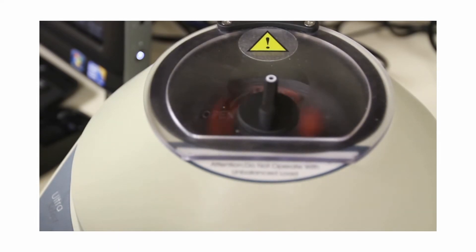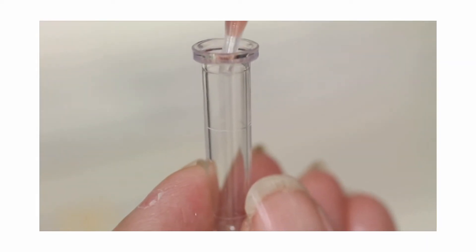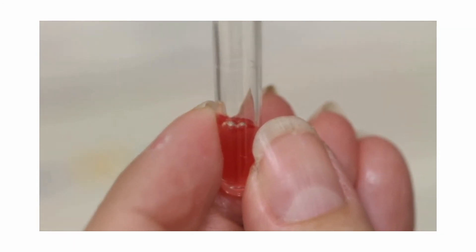This spinning forces the heavier blood cells to the bottom of the tube and leaves the serum at the top. This process is necessary because it is serum that contains many of the chemicals produced by the organs.